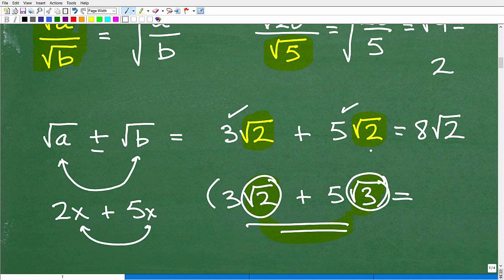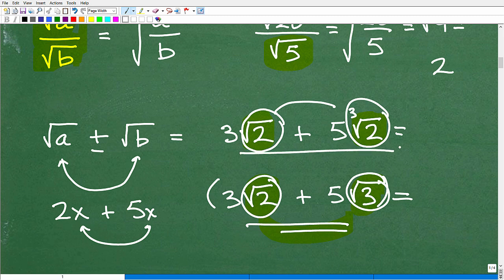Let's go back to this problem. I have 3 square root of 2 plus 5 square root of 2. What if this was the cube root of 2? Could I do this problem, 3 square root of 2 plus 5 times the cube root of 2? No, I cannot because these two are not exactly the same. They're different. So this would just be the final answer.